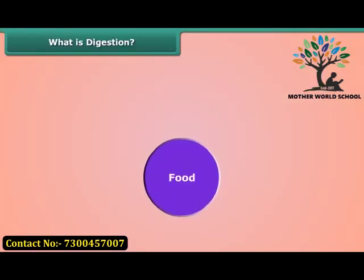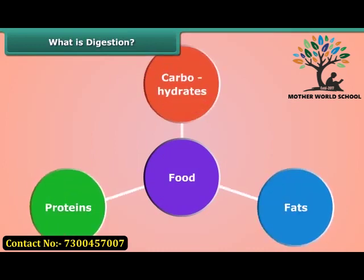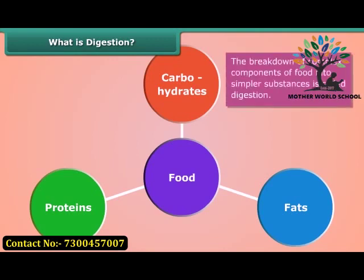We all know food is made up of complex substances like carbohydrates, fats, and proteins. We cannot utilize these substances as such, so they are broken down into simpler substances. The breakdown of complex components of food into simpler substances is called digestion. Let us study digestion in human beings.